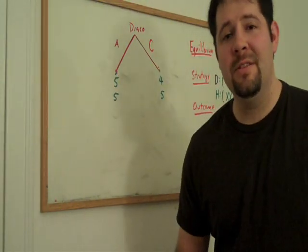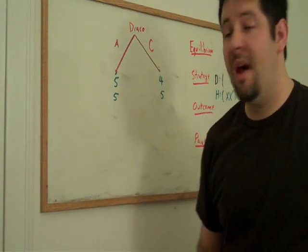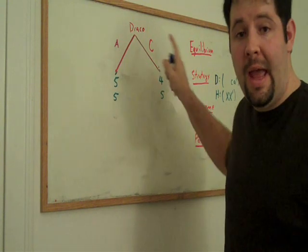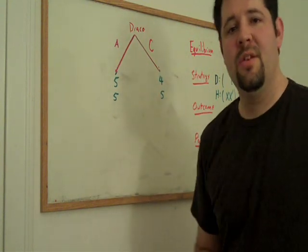So, now we get to the final step of the problem. We get to Draco's first node. And what we'll see is that now Draco is choosing between big A and big C. Draco prefers five to four and so he'll choose A.